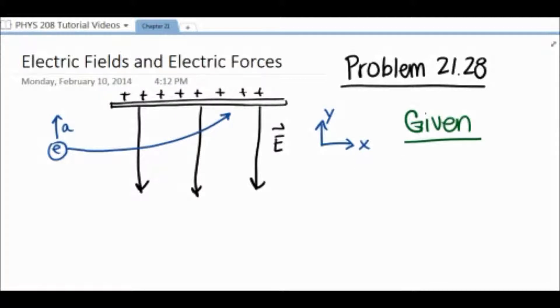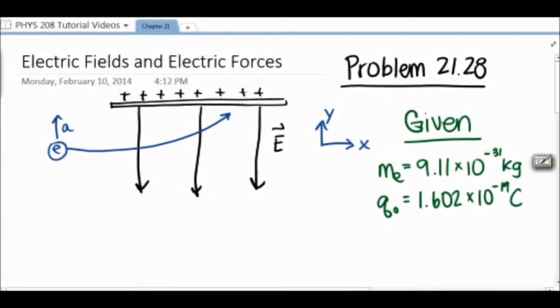We know from earlier in the chapter that the mass of an electron is equal to 9.11 times 10 to the negative 31st kilograms. We also know that the charge of an electron is equal to 1.602 times 10 to the negative 19th coulombs.